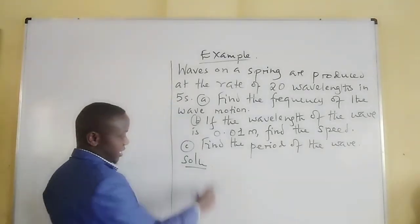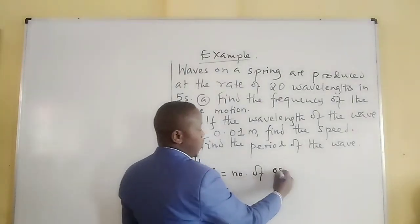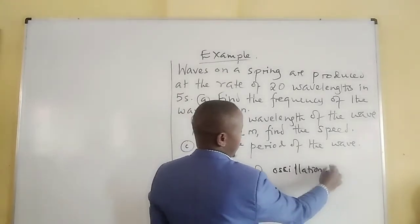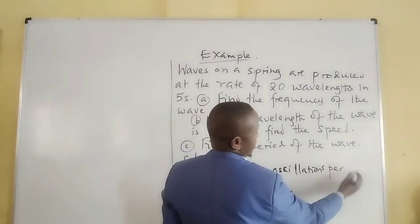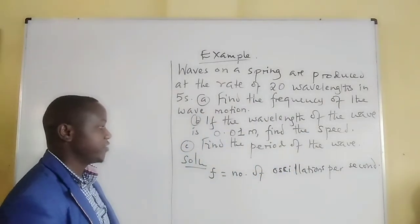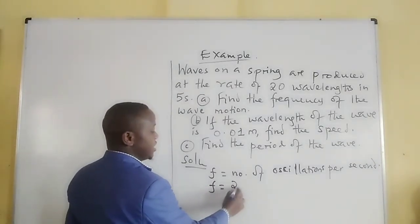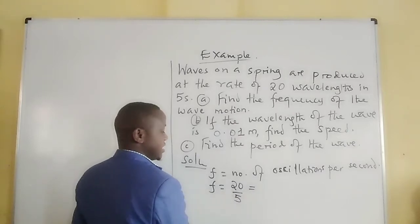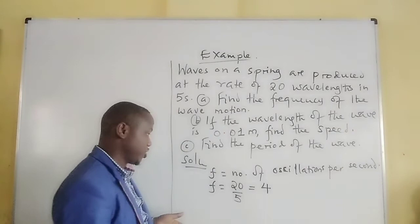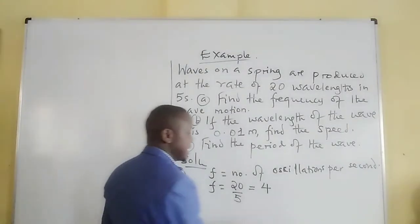We know what we call frequency. Frequency is the number of oscillations per second, or per unit time. So the frequency will be: if we have 20 in five seconds, then in a second we will have four of them. So after getting four, we don't call it wavelengths per second; we call it hertz.